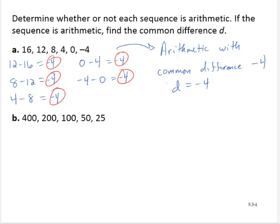Looking at the next sequence, we have 400, 200, 100, 50, 25. To determine if it's arithmetic, we would say, 200 minus 400 is negative 200. 100 minus 200 is negative 100.